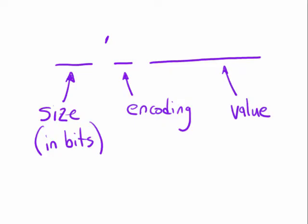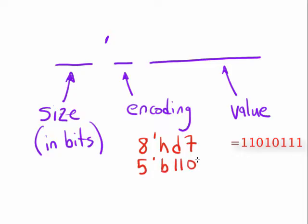For example, we could write the 8-bit hexadecimal constant D7, the 5-bit binary constant 11001, or the 10-bit number that has the decimal value 978.